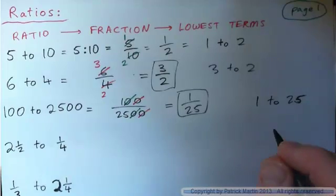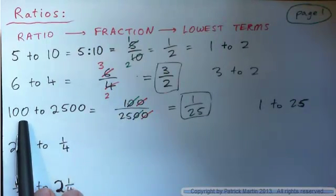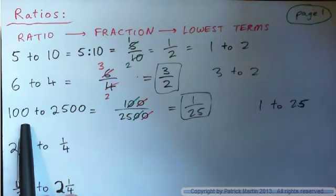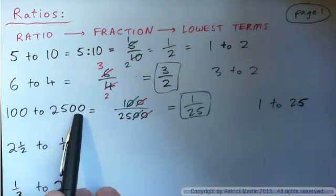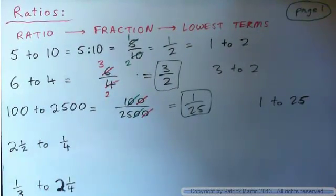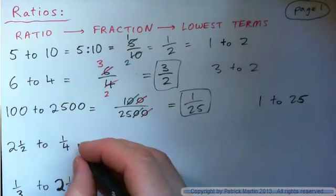If you were looking at the amount of calories a person took in a day, and let's say 100 calories came from fat, the ratio of calories from fat to total calories would be 100 to 2,500. And that's the same as 1 to 25 — 1 calorie of fat for every 25 calories consumed in a day.